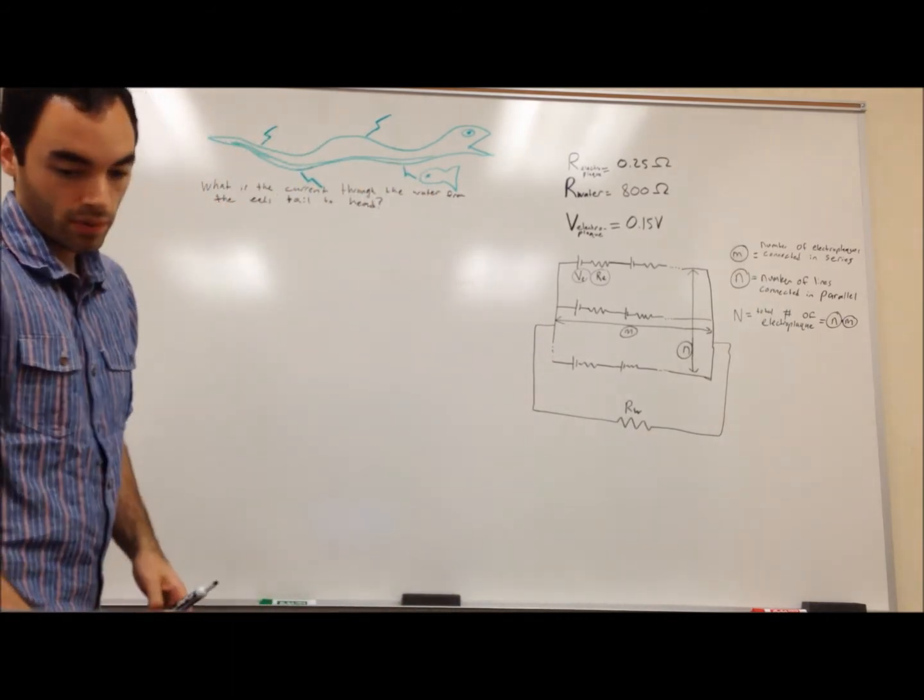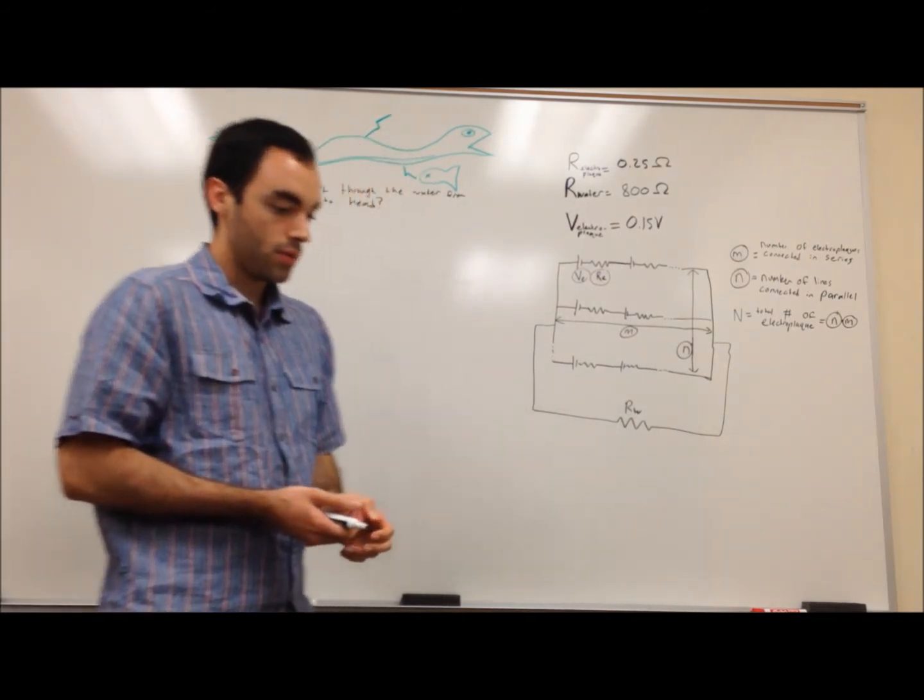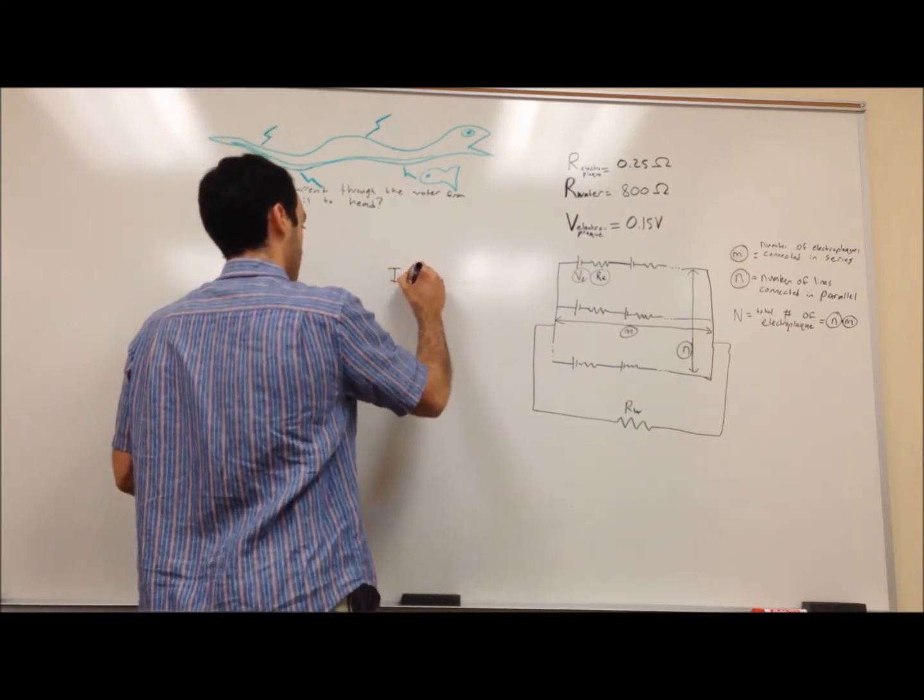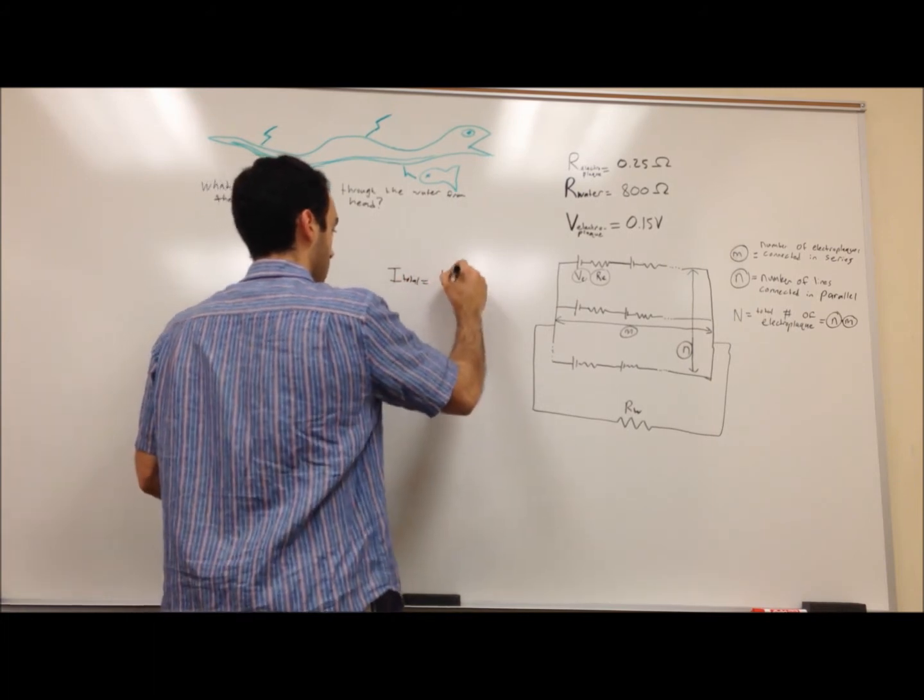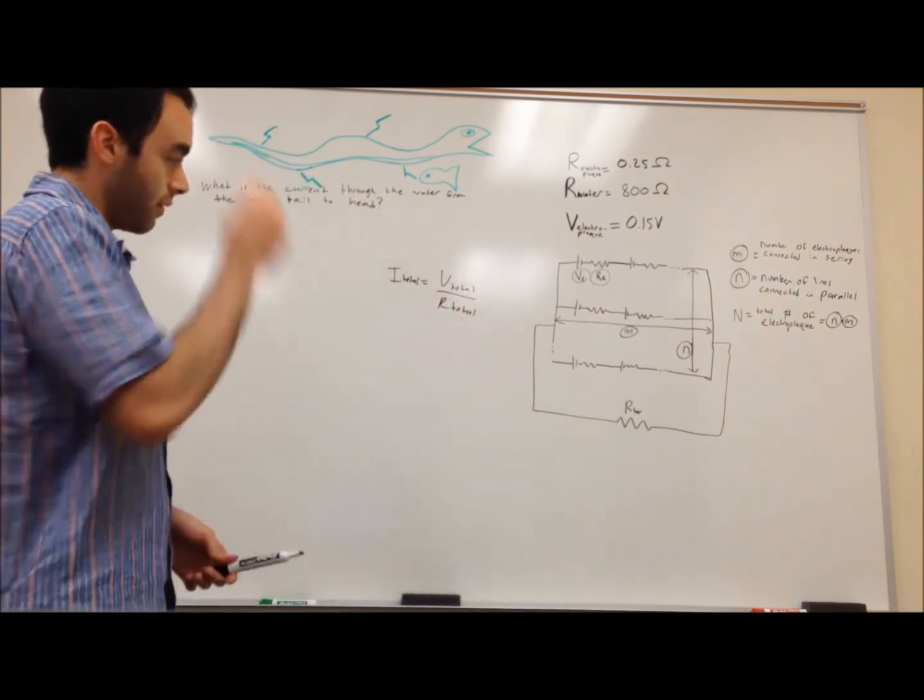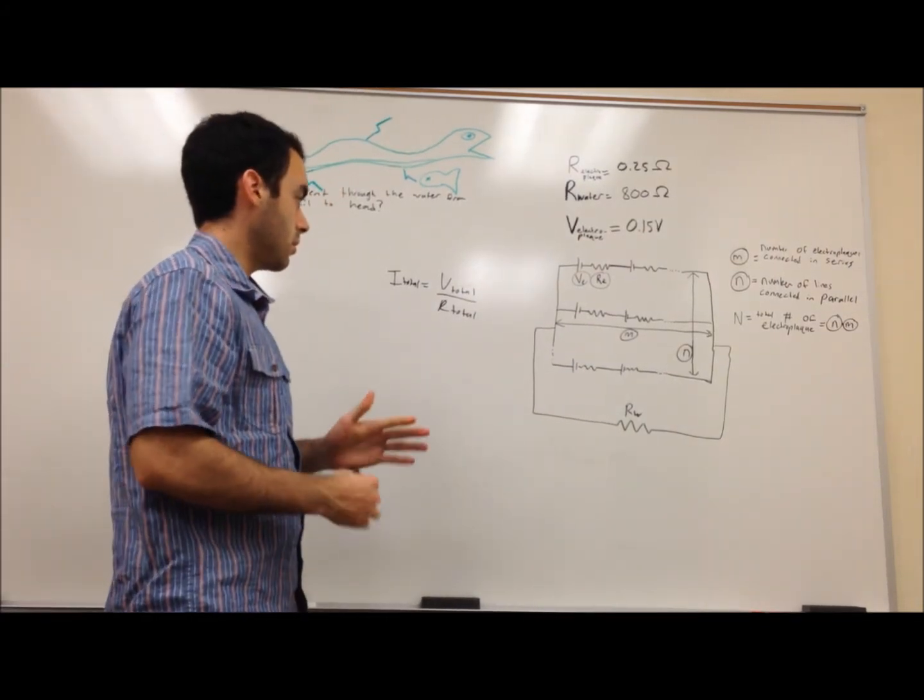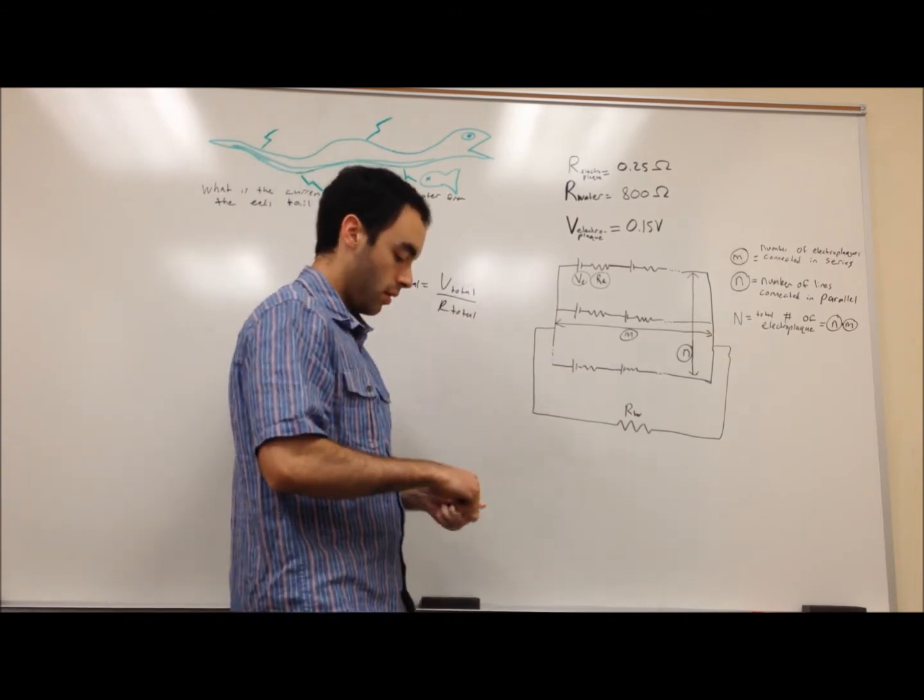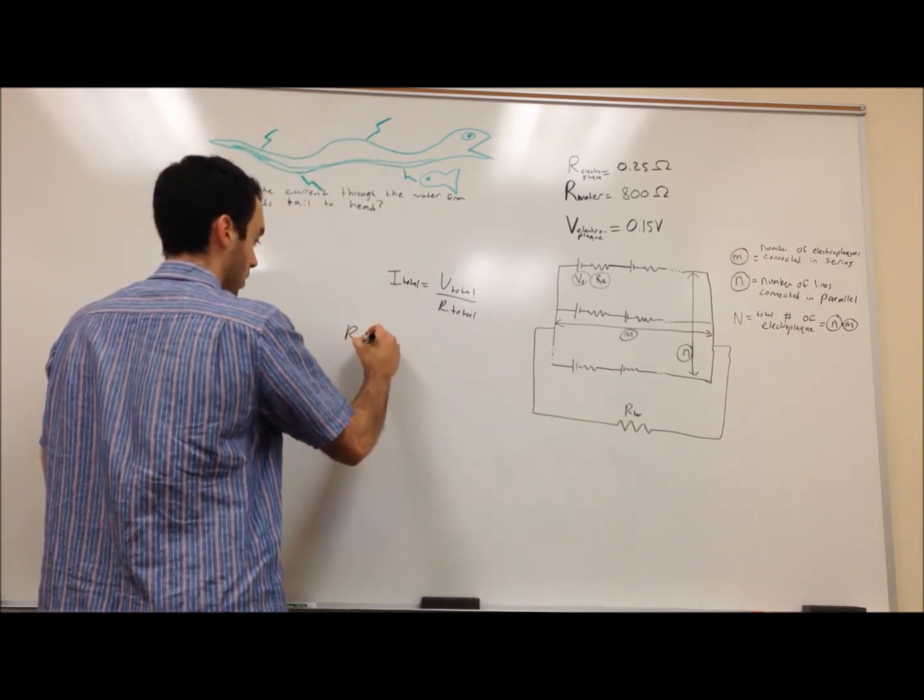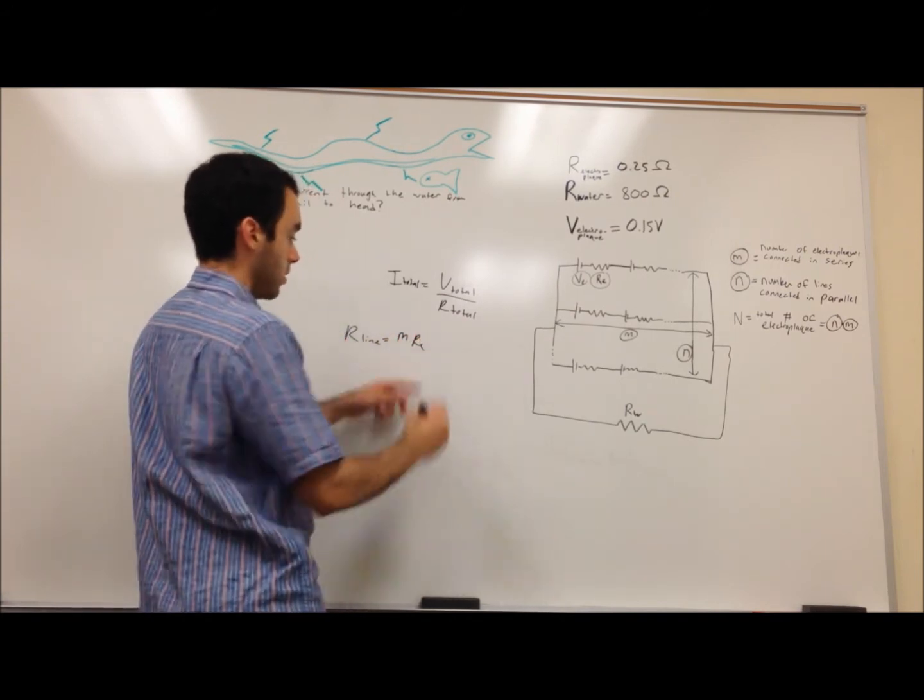So the first step that we're going to want to do is to find the relationship of current, resistance, and voltage. And we know that relationship from class. It's Ohm's law. So we have I_total equals V_total over R_total. So if we break this down, the first thing we're going to want to do is calculate the total resistance. Alright, so the resistance in one line of electroplaques is just going to add together. And since we have m number of electroplaques in one line, we have the resistance of one line of electroplaques equals m times R_E, the resistance of one electroplaque.